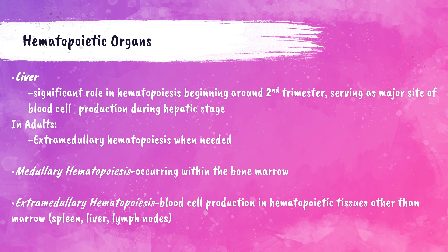The liver is the largest solid organ in the body, located on the right-hand side of the abdomen. Beginning around the second trimester of pregnancy, the liver plays a significant role in hematopoiesis of the developing fetus — this is the hepatic phase. Hematopoiesis begins in the yolk sac, transitions to the liver at four to five weeks reaching peak at three months gestation, then shifts to the bone marrow around five months and remains there in adulthood.